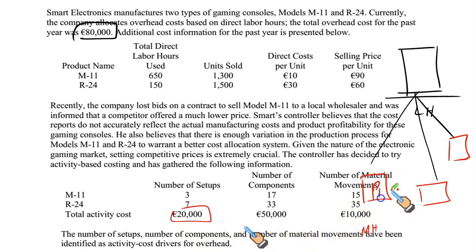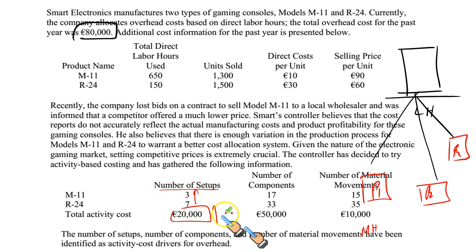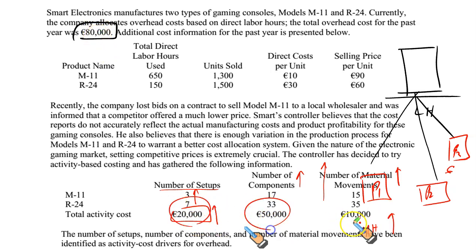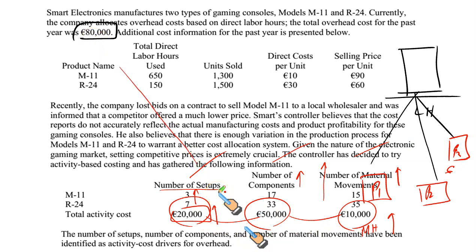Pool 1 is driven by number of setups, pool 2 by number of components, and pool 3 by number of material movements. More setups means a larger pool 1; more material movements means more cost in pool 3. In other words, we have split the 80,000 euros into three smaller cost pools — 20,000, 50,000, and 10,000 — with three different activity bases, totalling 80,000. The cost remains the same but will be allocated more effectively, resulting in more accurate costing.